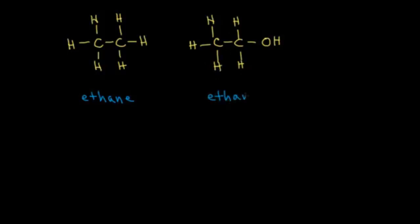Let's start with boiling point. The boiling point of ethane is approximately negative 89 degrees Celsius. Since room temperature is somewhere around 20 to 25 degrees Celsius, we are much higher than the boiling point of ethane, which means it's already boiled — it's already turned into a gas. So at room temperature and room pressure, ethane is a gas.